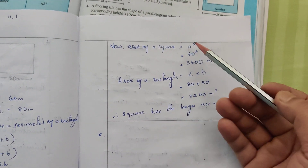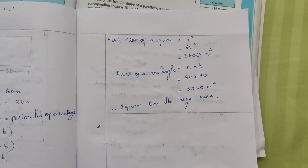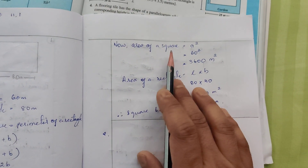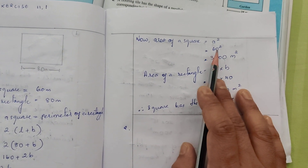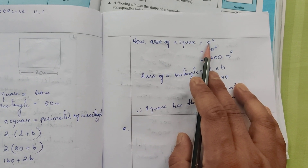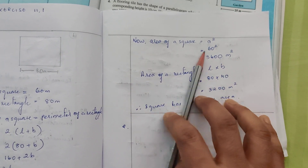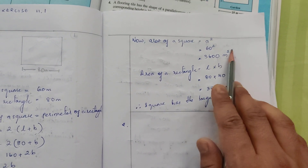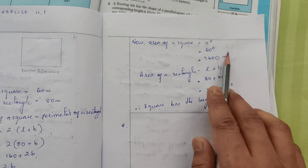Area of a square is equal to A². The side of the square is 60, so area of the square = 60² = 3600 meter square.